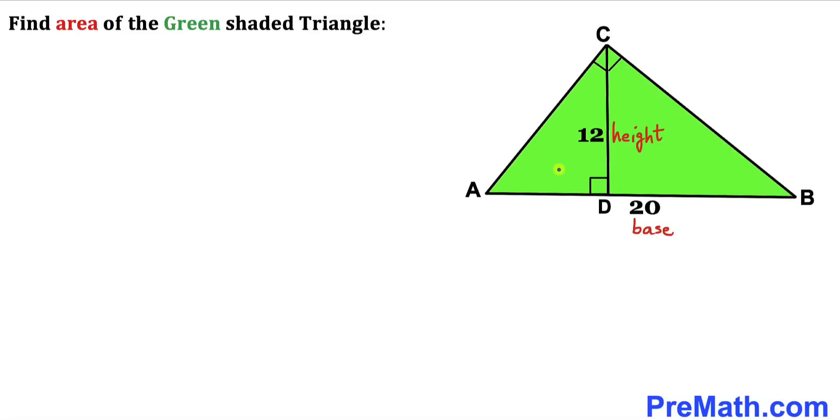Welcome to PreMath. In this video we have a right triangle ABC with base 20 units and height CD 12 units. Keep in mind that these angles, this one and this one, are each 90 degrees.